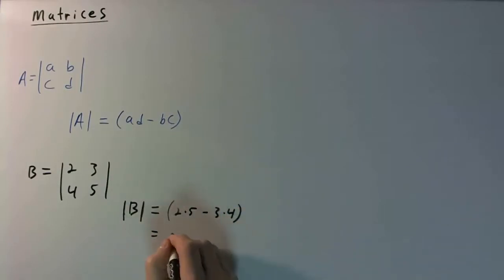And so that's going to be equal to 5 times 2 is 10 minus 3 times 4 is 12. And so the determinant of this matrix is going to be negative 2.